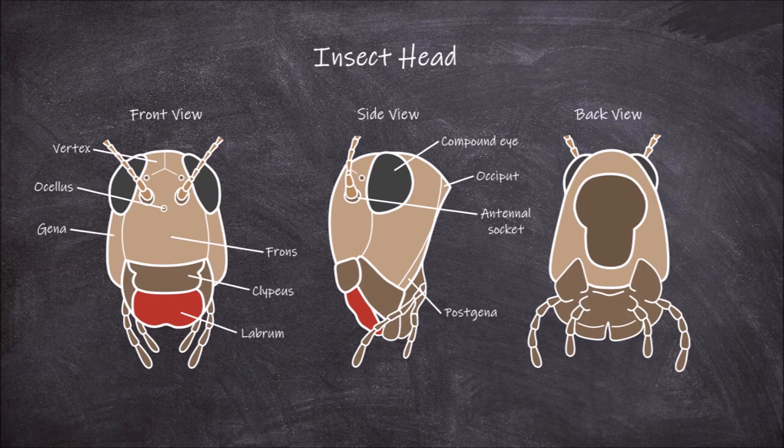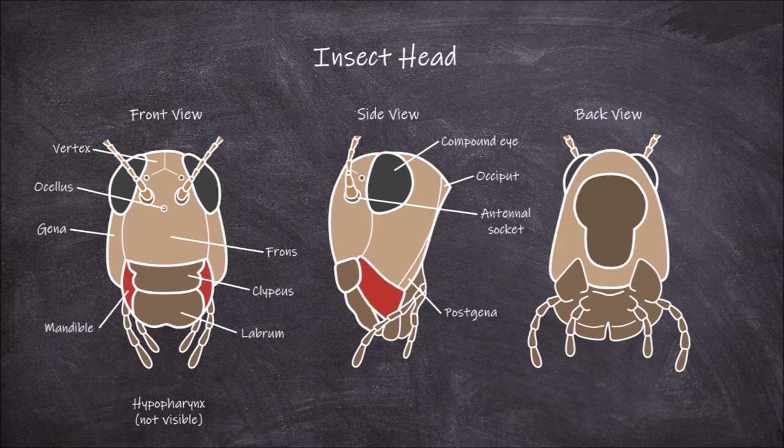The second mouth part is the hypopharynx, which is a tongue-like structure. The hypopharynx is located further back in the mouth and is not visible from the outside in grasshoppers. The next mouth parts are the paired mandibles.